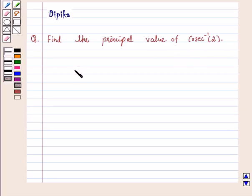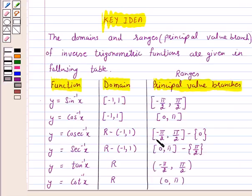Now we know that the range of the principal value branch of cosecant inverse is closed interval minus pi by 2 to pi by 2 excluding 0. So let's start the solution.